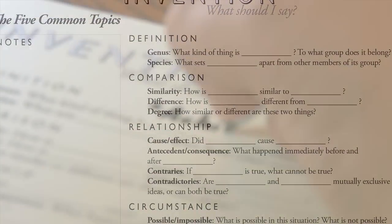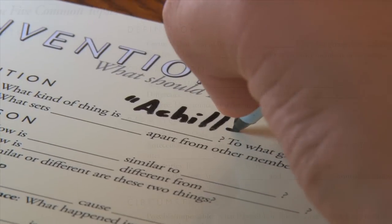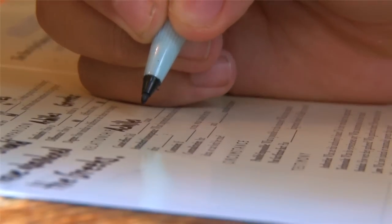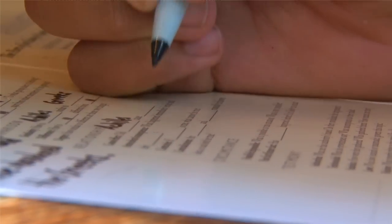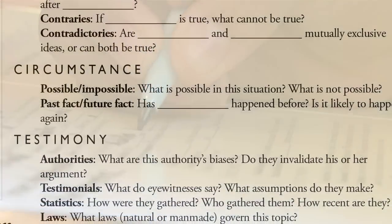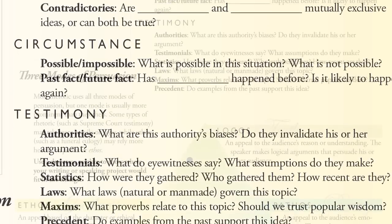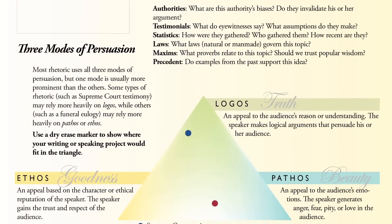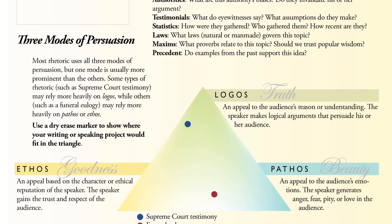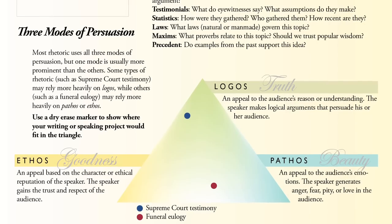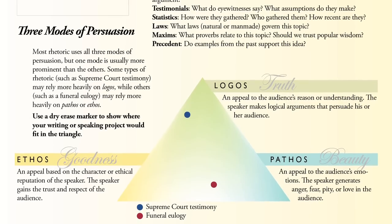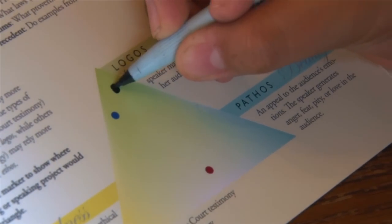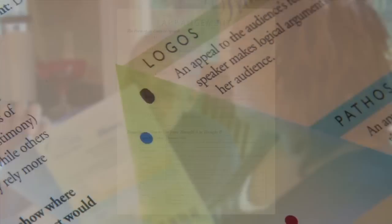In our example, we might fill in Achilles as the term we would define and compare, then examine his relationships to the Greeks, the circumstances of the abandonment, and the testimony of any witnesses. Below this section sits a triangle. Each point of the triangle represents one of three means of persuasion systematized by Aristotle. The student would put a dot on the area of the triangle to show how he plans to persuade his audience.